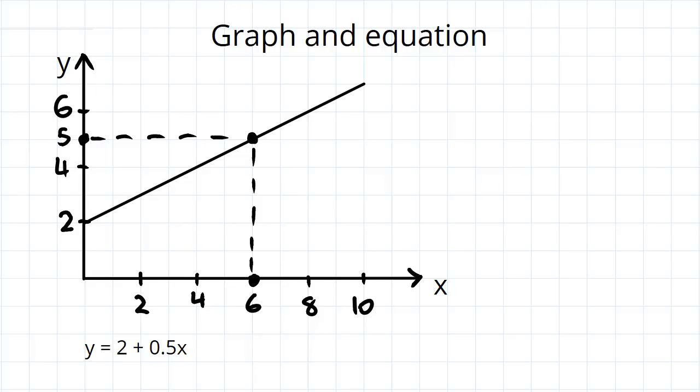What the graph says is that for this x value and this y value, the equation holds true. So our y value 5 must be equal to 2 plus 0.5 multiplied by our x value of 6, and we can see that that's true.